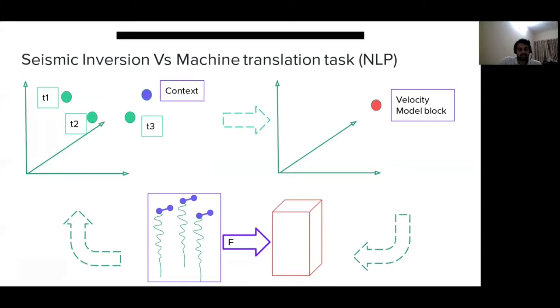As you can see, this computation is not affected by the acquisition geometry or by the number of traces in the context. Once you have the embedding for a context, you can then use it in any downstream task, like predicting velocity models or predicting subsurface models.